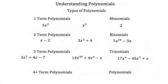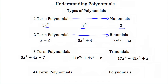There are several types of polynomials, and these are based on the number of terms in the polynomial. If we have a one-term polynomial, we call it a monomial. We've seen several monomials already — examples are 5x squared, y cubed, and the number 2. If we have a two-term polynomial, we call it a binomial. Examples of binomials are: x minus 2, 3x squared plus 4, and 7a to the 19 minus 3a.